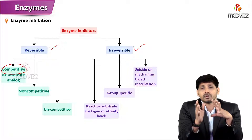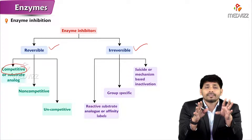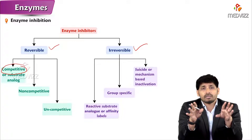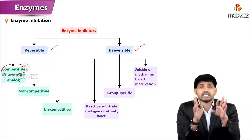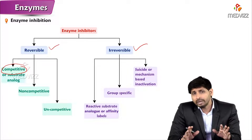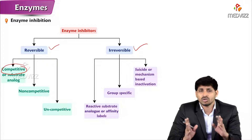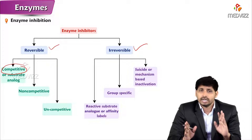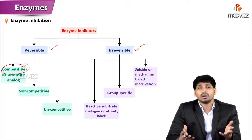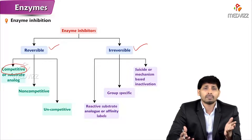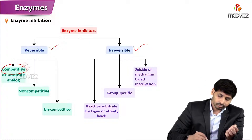In competitive inhibition, the inhibitor is similar in shape to the substrate, so the enzyme cannot distinguish between them and mistakenly binds to the inhibitor, forming an enzyme-inhibitor complex. In non-competitive inhibition, the inhibitor is not structurally similar to the substrate — there is no competition, yet it still inhibits the reaction. In uncompetitive inhibition, the inhibitor binds at a site other than the active site and deactivates the enzyme-substrate complex.